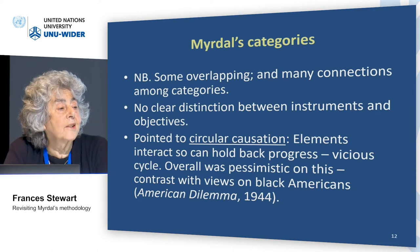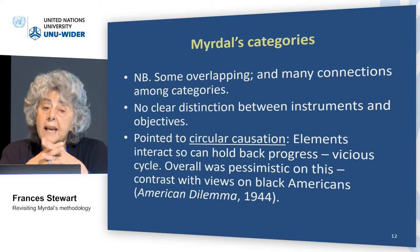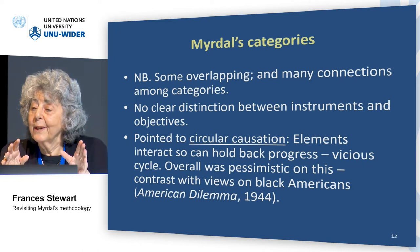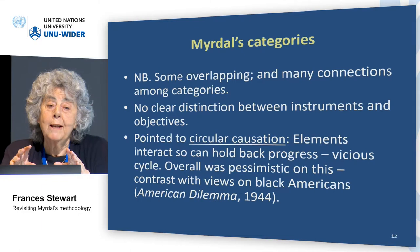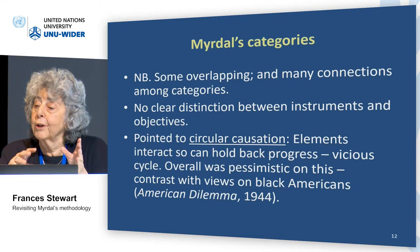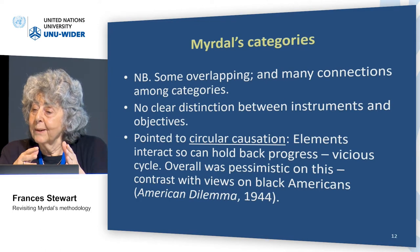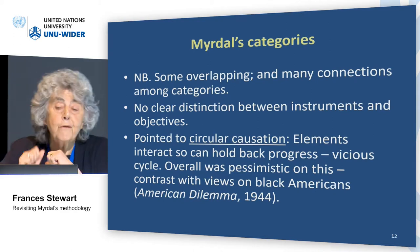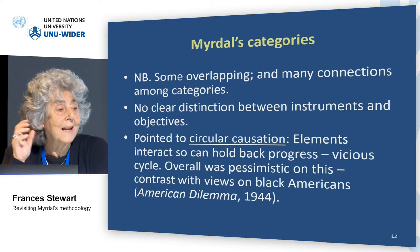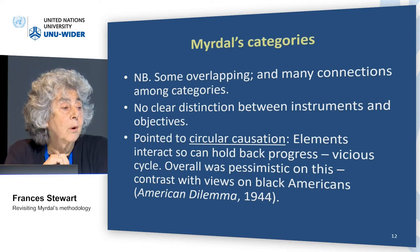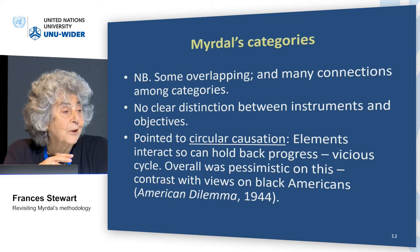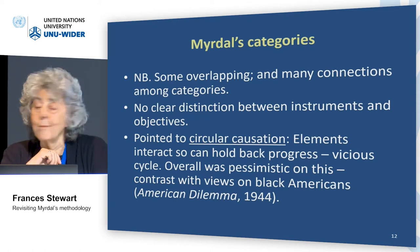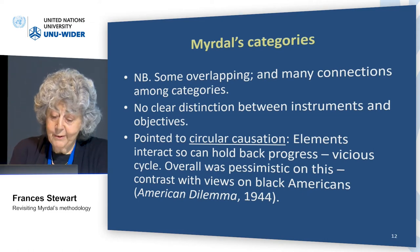It's quite interesting to reflect on Myrdal, because he said these five are so interconnected that we're not going to get development in Asia, really — he was very pessimistic. Whereas it's really interesting, because he used very much the same methodology for his great book, An American Dilemma, in which he looked at the situation of Black Americans and had very much the same views about circular causation. But there, he thought that if you pushed forward on one, you'd get progress on the others — but in Asia, he thought the opposite. And in fact, of course, it turned out he was wrong in both cases. He was wrong in Asia, as we've heard — Asia did transform. And he was wrong in the US — they still have a terrible problem.